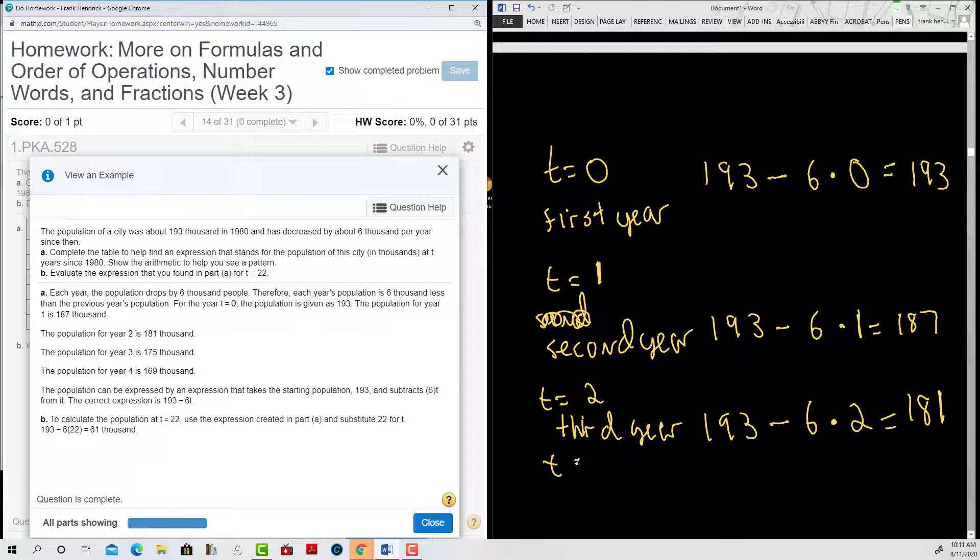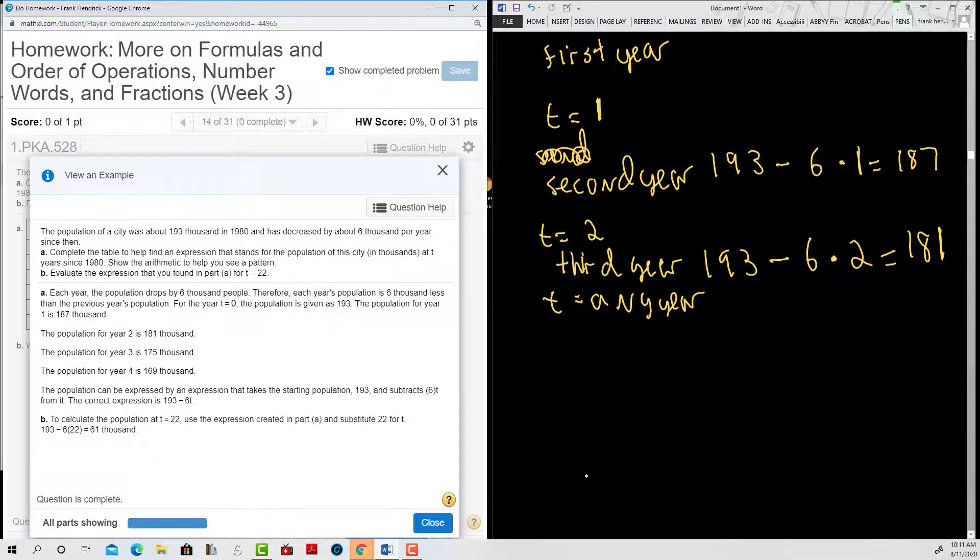So for t being any year, we're going to have 193 and this will be decreasing by 6 times t being a year. T could be any year.